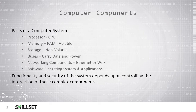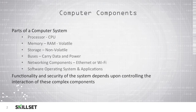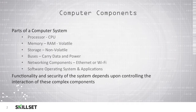Your computer will also have software which allows it to perform different functions. All computers have an operating system which is the basic software that runs the system, and then users install applications on top of the operating system to perform necessary functions such as word processing or browsing the internet. In order for your system to function properly and to remain secure, all of these complex components have to work correctly together and you must control the interaction between the components.